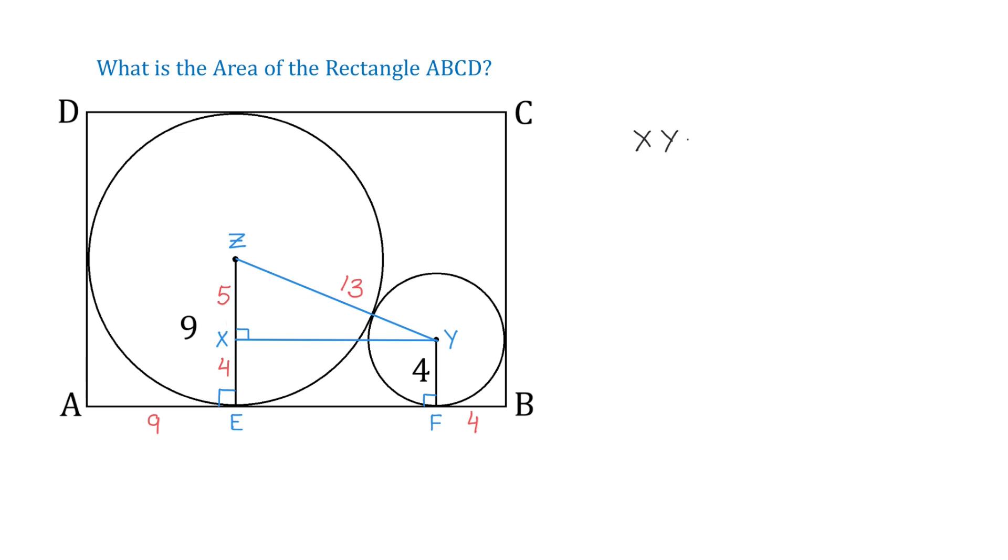which is 13 squared, minus 5 squared. Then, 169 minus 25 makes 144, and square root of 144 is 12.